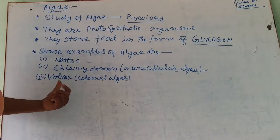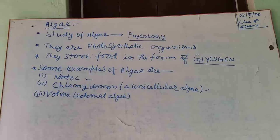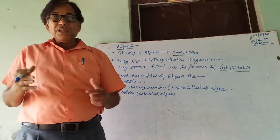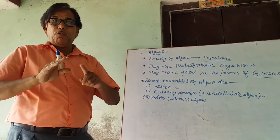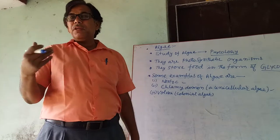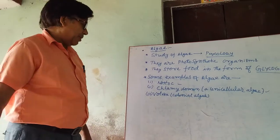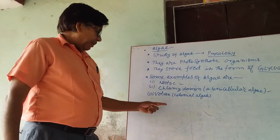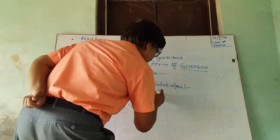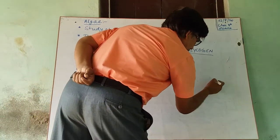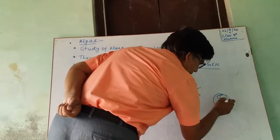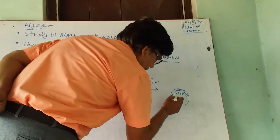Volvox is a colonial form of algae. Hundreds of algae live together to form a colony and can form algal blooms in a water body. Volvox forms a colony like this.